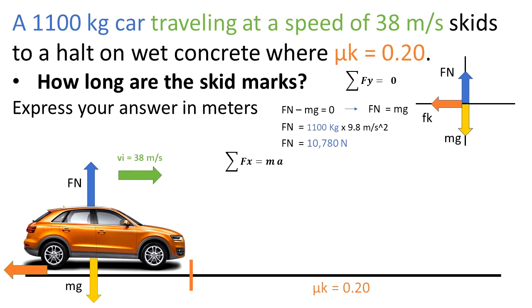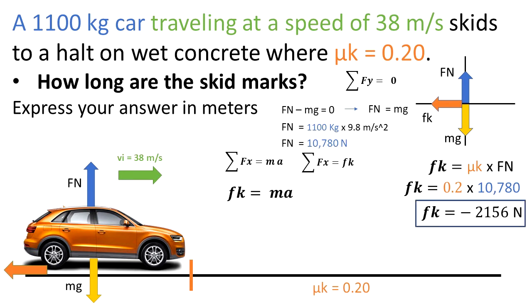From this, we know that the summation of the forces in the x direction is equal to the mass times the acceleration, because we have an unbalanced force. The only force that we have in the x direction is the force of kinetic friction. Then, we can conclude that Fk, force of kinetic friction, is equal to mass times acceleration. We can calculate the force of kinetic friction as μk times the normal force. That's why I previously calculated the normal force. Then, Fk is 0.2 times 10,780 N that we got from the calculation for normal force. And we have that the force of kinetic friction is negative 2,156 N.